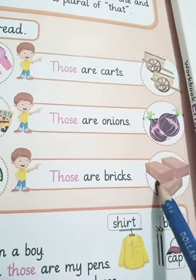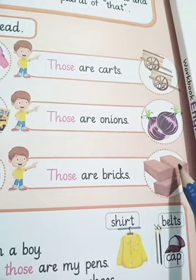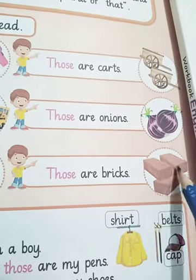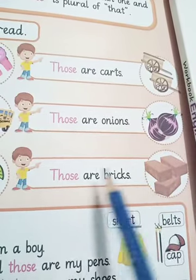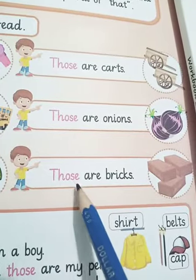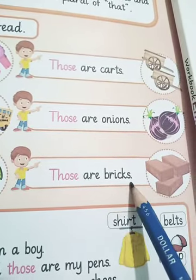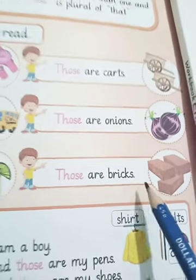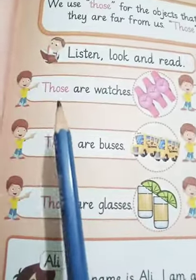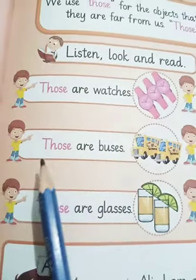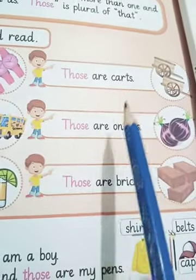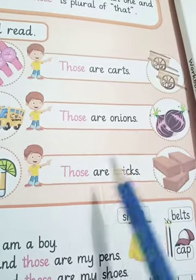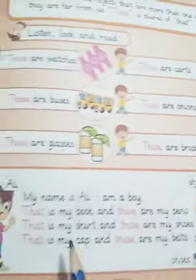Which picture is this — bricks. How many bricks are here? One, two, three — these are plural and they are far away from the boy, so the boy is saying: 'Those are bricks.' Now read one more time: Those are watches. Those are buses. Those are glasses. Those are cars. Those are onions. Those are bricks.